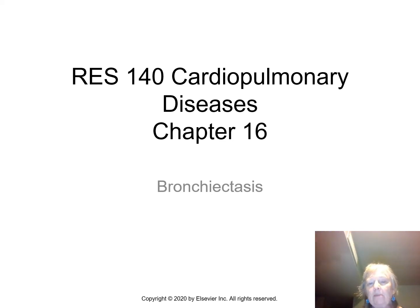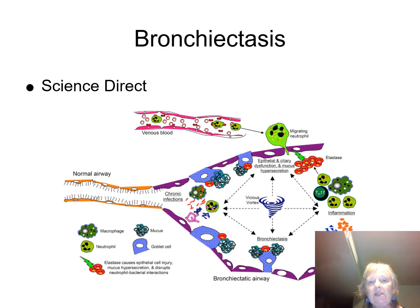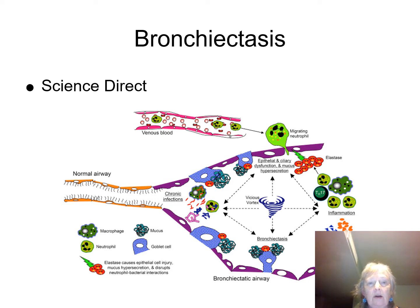Welcome back — we're going to talk about bronchiectasis, which we mentioned with CF patients. There are a lot of things that occur: airway epithelial and ciliary dysfunction, mucus hypersecretion, and chronic infections, which are major causes of bronchiectasis. We also see inflammation that results in permanent airway injury and dilation, and bronchiectatic airways that are poor at airway clearance. As a result, everything seems to get worse — some people call this the vicious cycle.